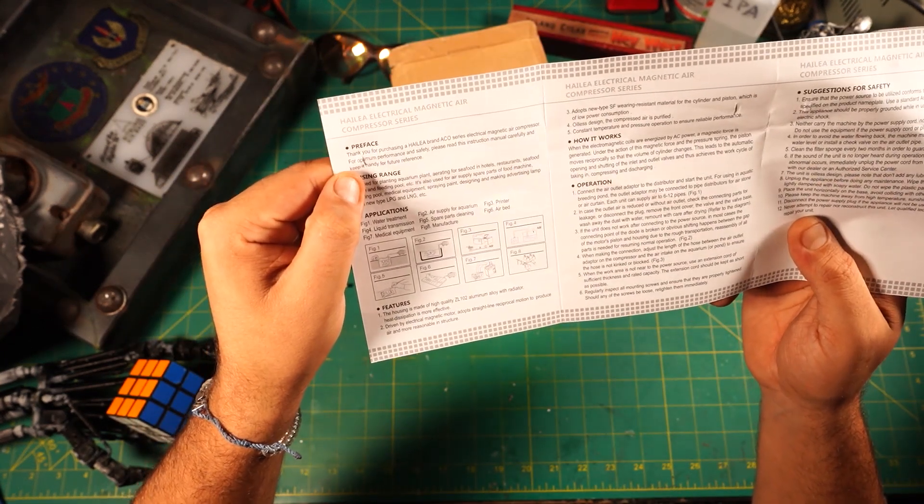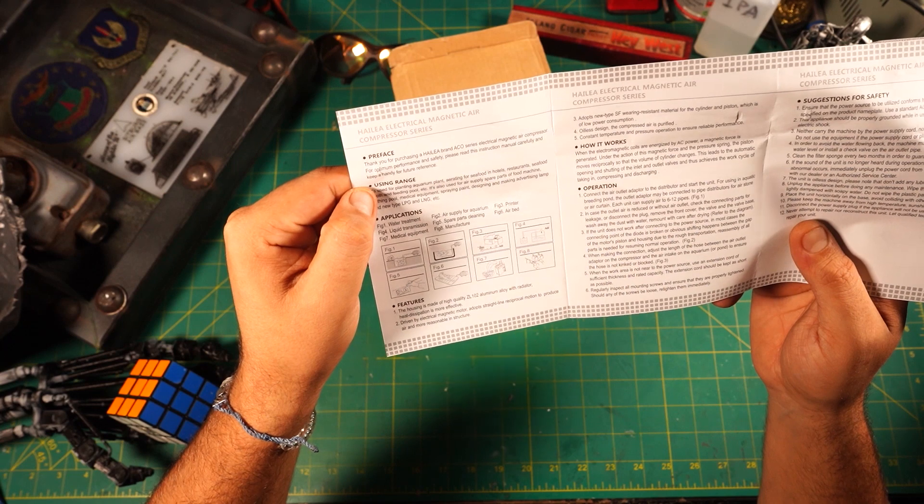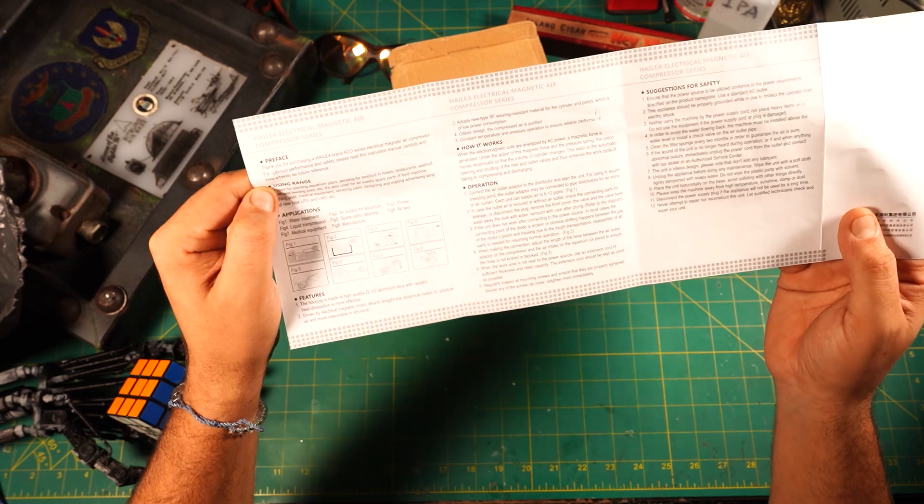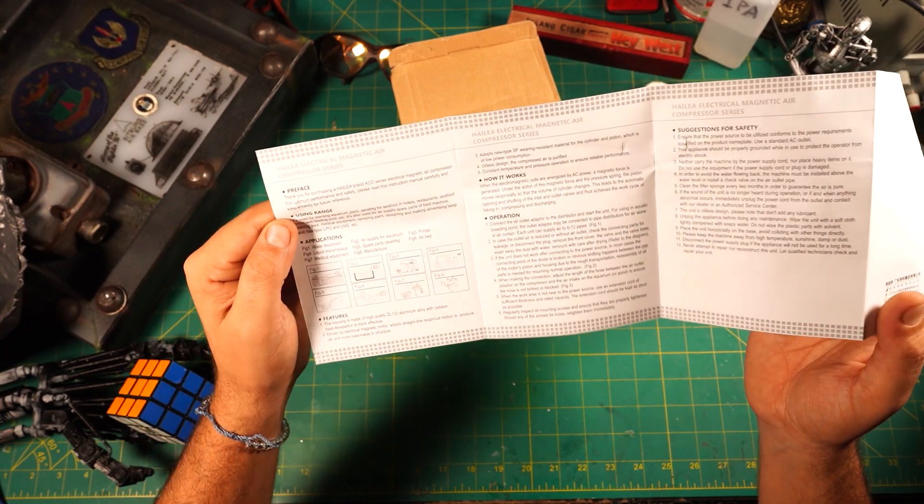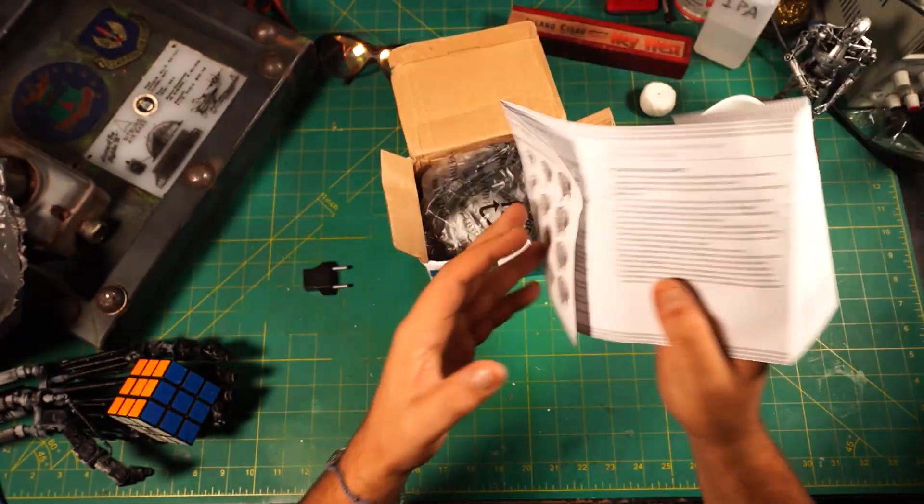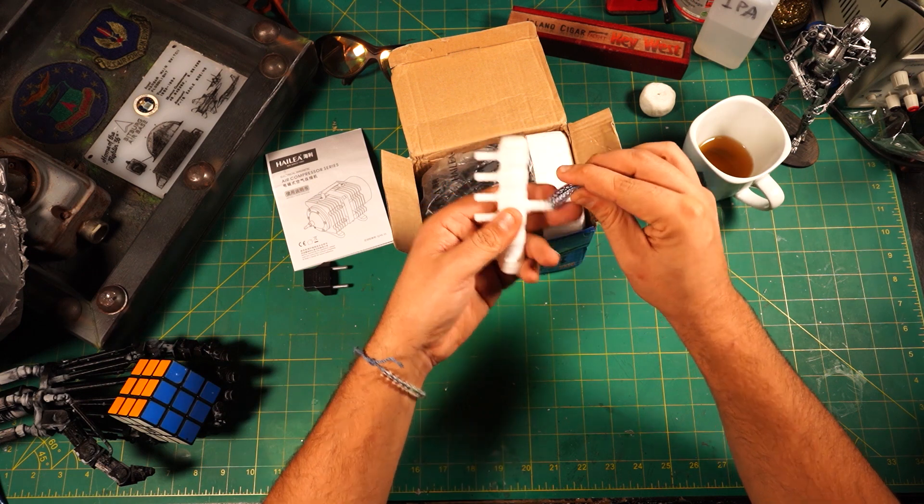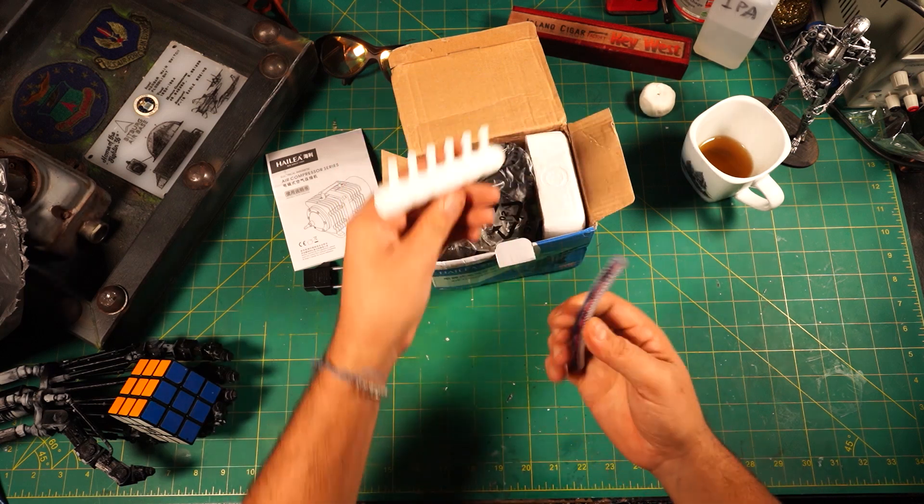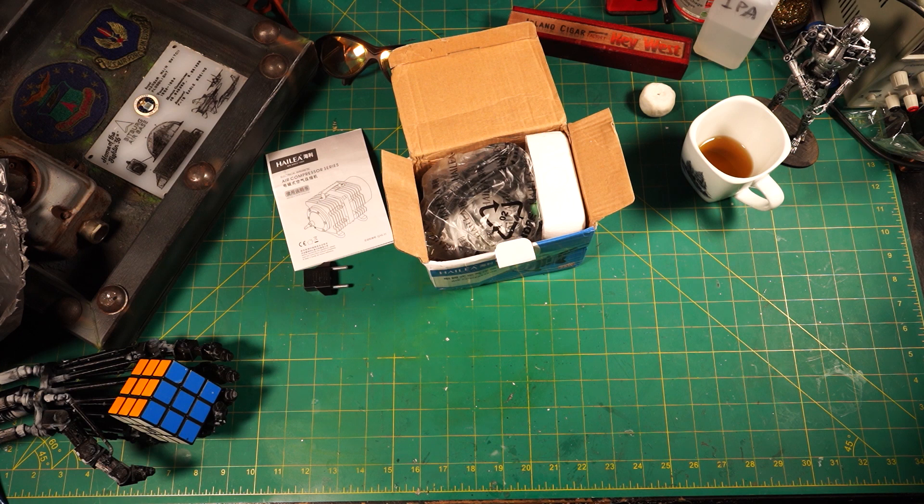We have my favorite part, the manual. Let's see what nice languages we have—Chinese and English. You have different models here, different sizes. I think this is the second smallest one, the 208. It says thank you for purchasing the Hailea brand ECO series electromagnetic air compressor.